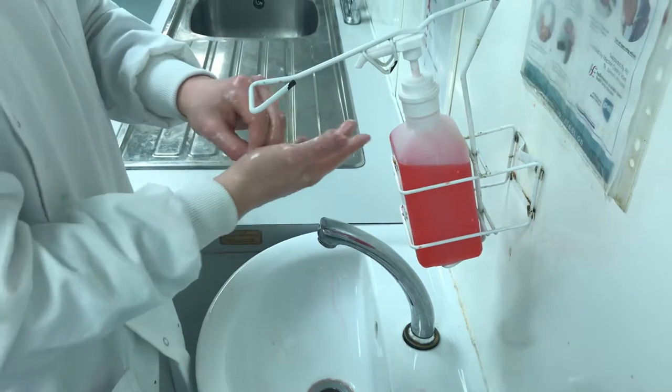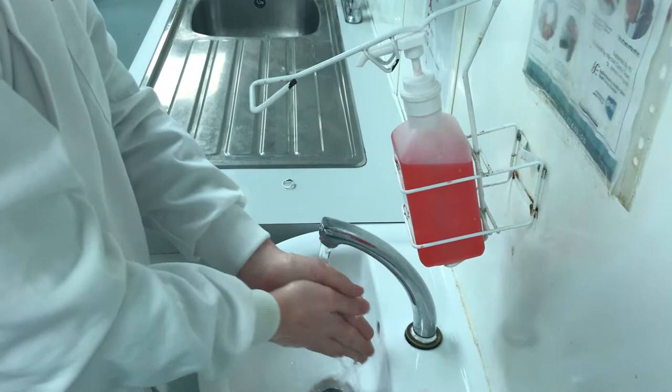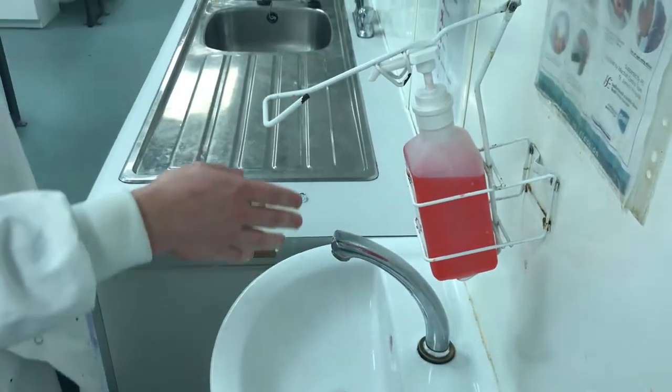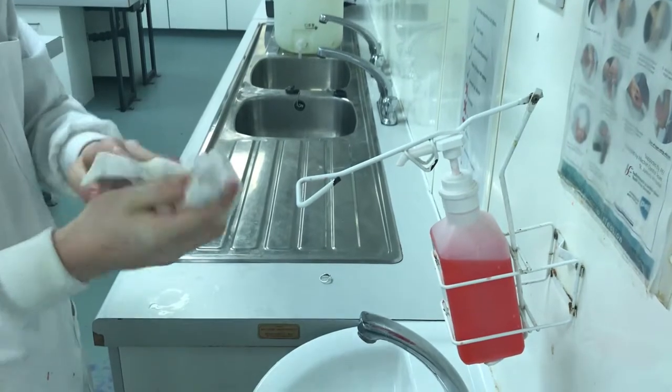Rinse hands thoroughly under running water to remove all traces of soap. Turn off the taps using your elbows. Dry hands completely using a disposable paper towel and dispose of this correctly in the waste bin.